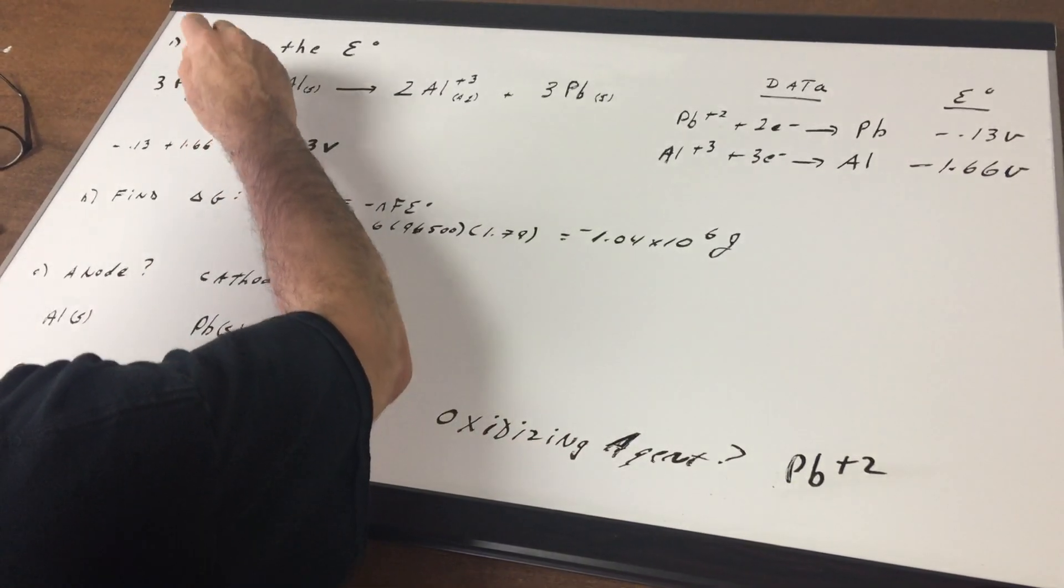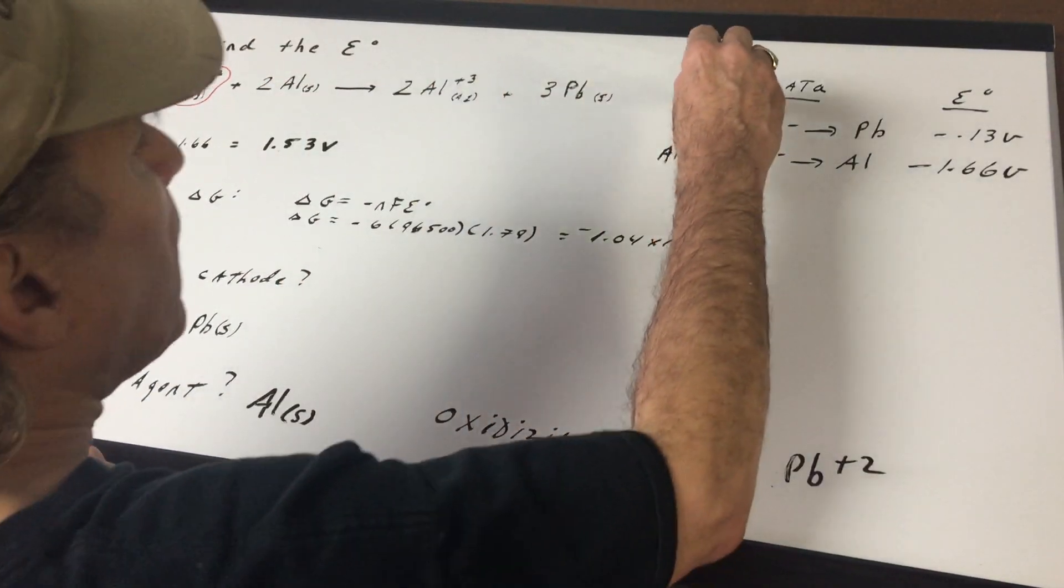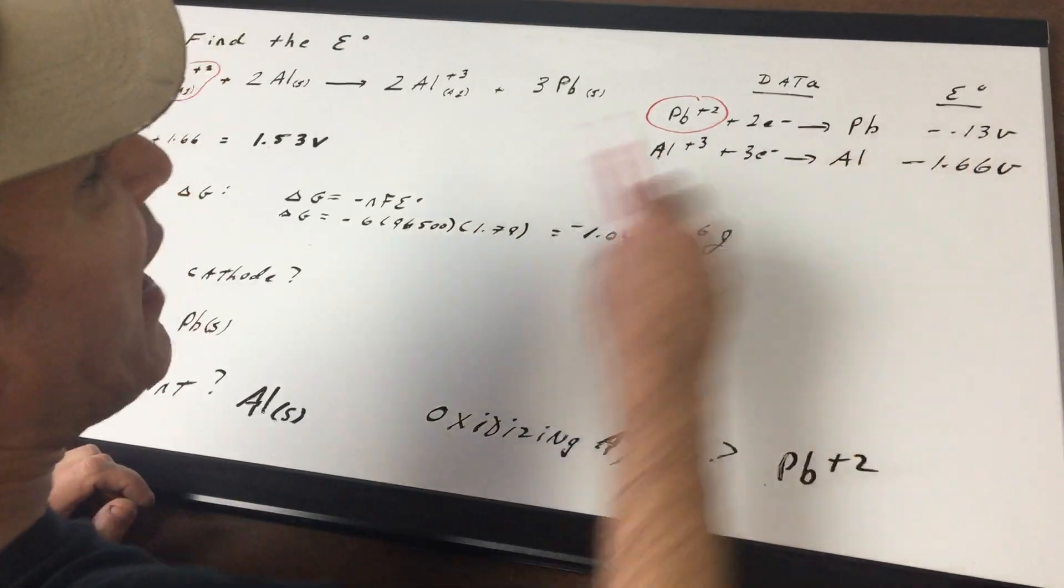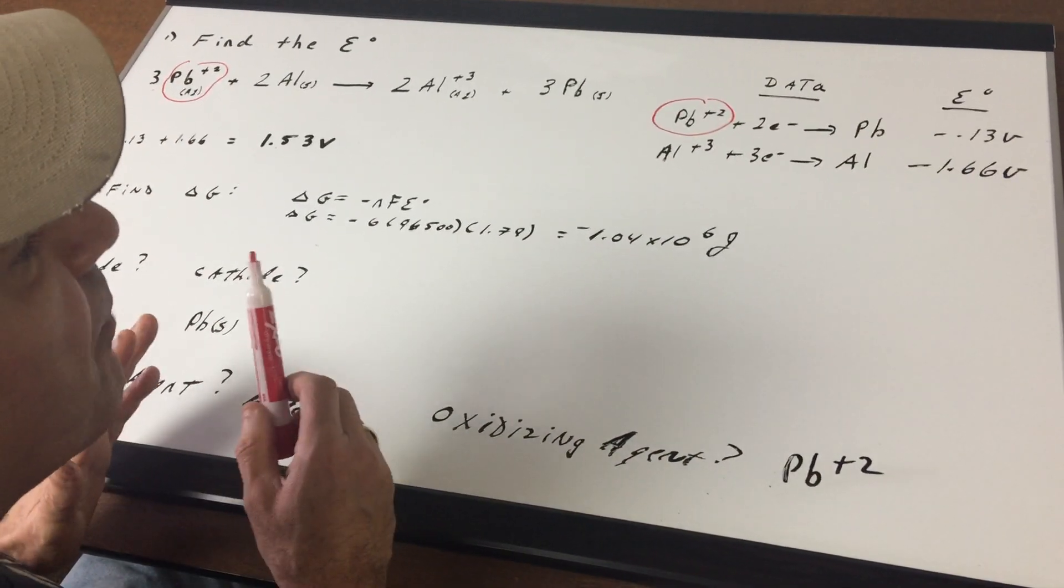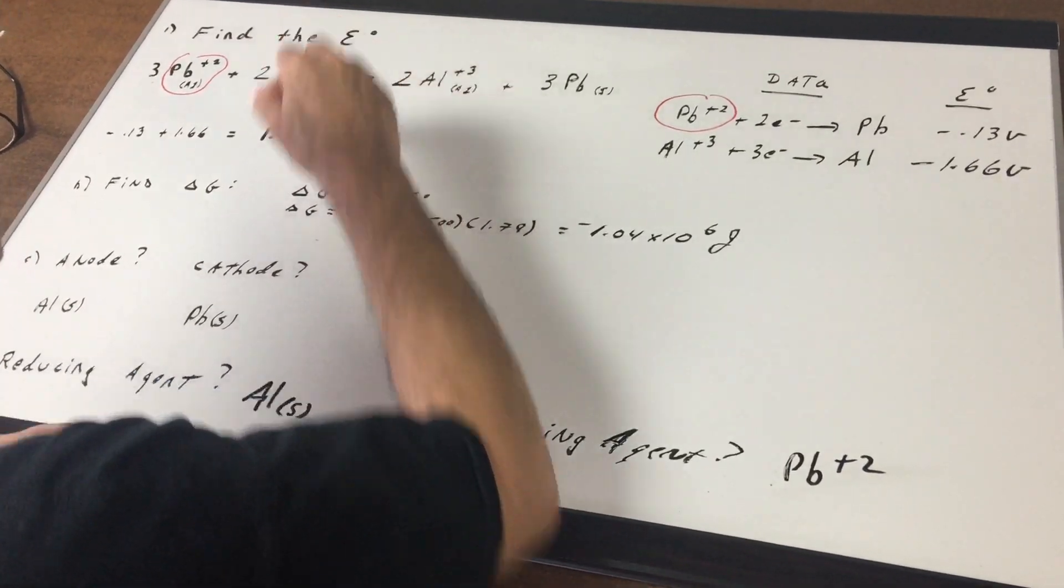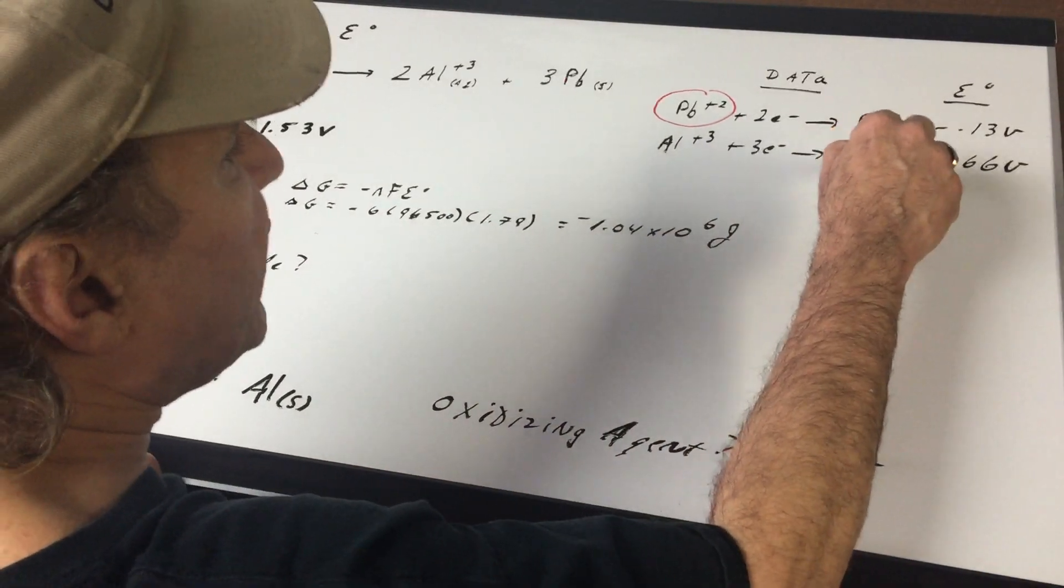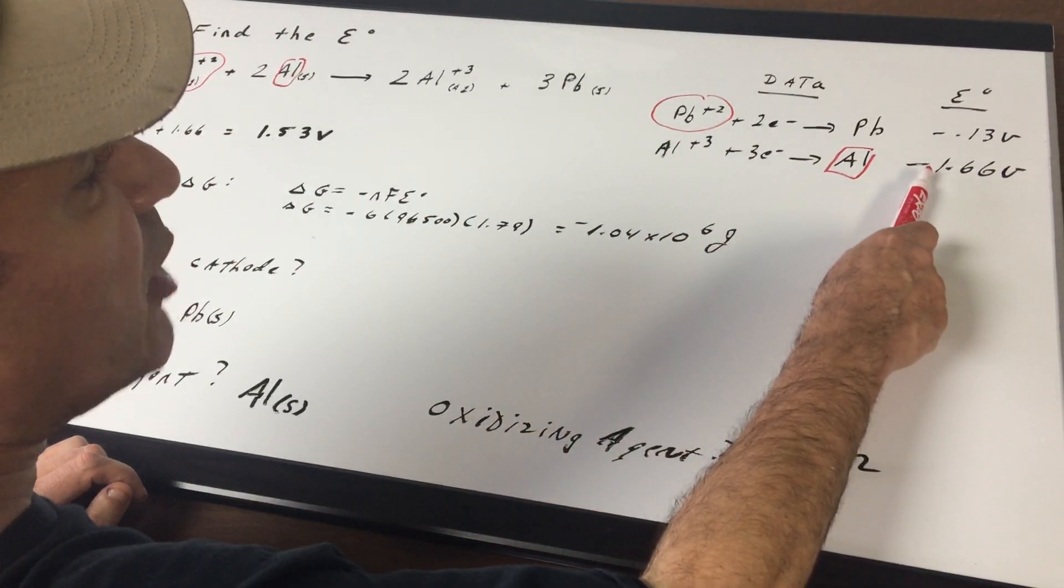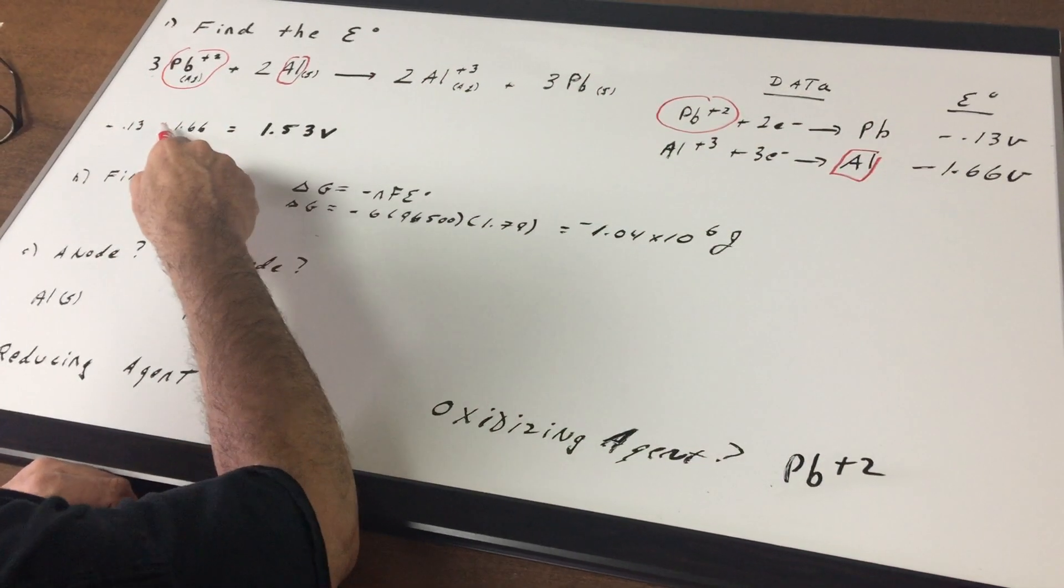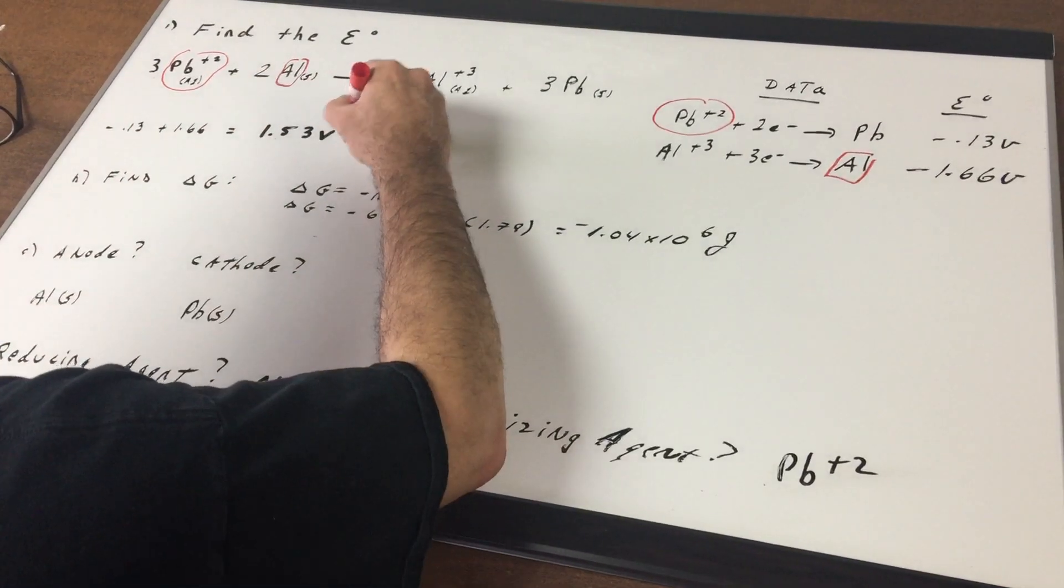The way I like to teach my students is if you focus on this side you got Pb+2. Pb+2 is on this side so that means you're going to keep the value of the E0. So we're going to keep the negative 0.13. Now you look on this side, you're always looking on the left side, you have aluminum and here the aluminum is over here, it's on the opposite side so we're going to switch the sign of this. So you're going to keep the negative 13, switch the sign of negative 1.66, make it positive, add them up and you get a positive voltage.